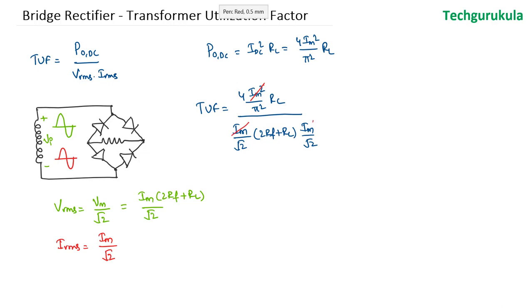So Im square gets cancelled and we get transformer utilization factor is equal to 8 by pi square times RL over 2Rf plus RL. So transformer utilization factor is 0.81 times RL over 2Rf plus RL.